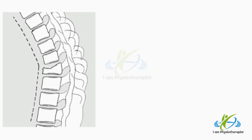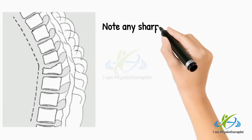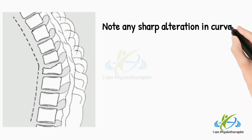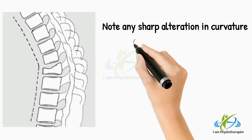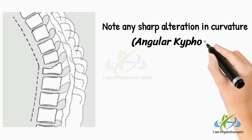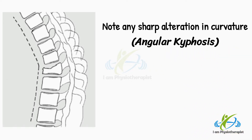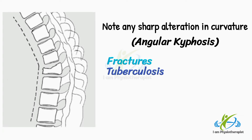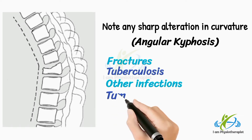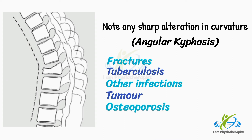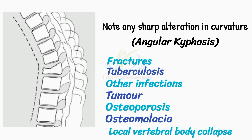In both the lumbar and the thoracic spine, note any sharp alteration in the curvature. Angular kyphosis is found typically where there is pathology restricted to one or two vertebral bodies — for example, from fractures, tuberculosis or other infections, tumour, osteoporosis, and osteomalacia with local vertebral body collapse.